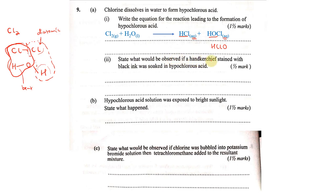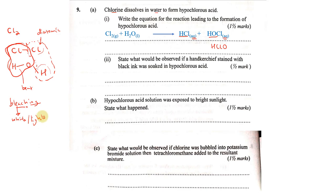State what would be observed if a handkerchief stained with black ink was soaked in hypochlorous acid. We know that chlorine, when dissolved in water, tends to have bleaching properties. To bleach means to remove color or cause something to turn white or at least a lighter color. They are telling us we had a handkerchief with black ink and soaked it in hypochlorous acid.